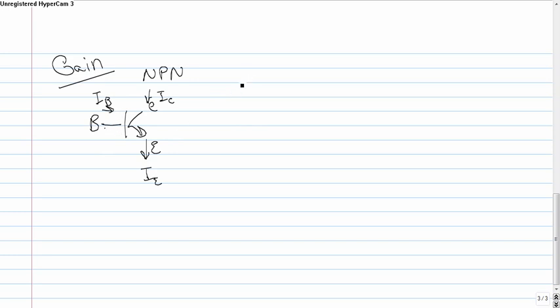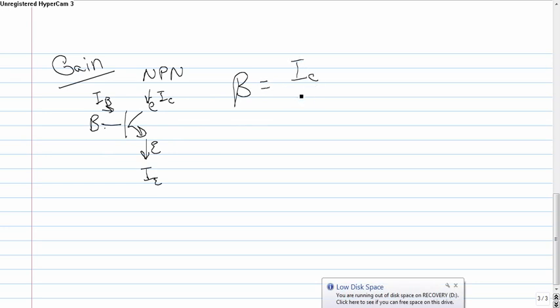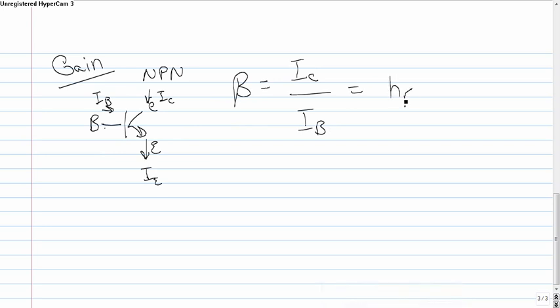Gain is the ratio of one current to another current. So if you want to talk about the gain between the base and the collector, there's a specific name for that. That is, it's called the beta value. And that's the ratio of the current flowing through the collector to the current flowing through the base. This is also known as the HFE value, or the VDC gain voltage.